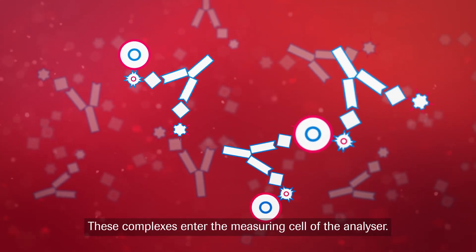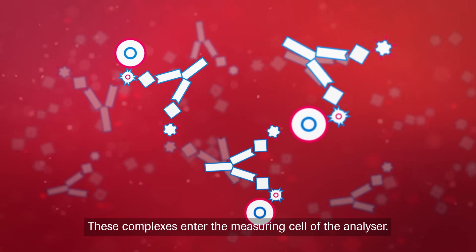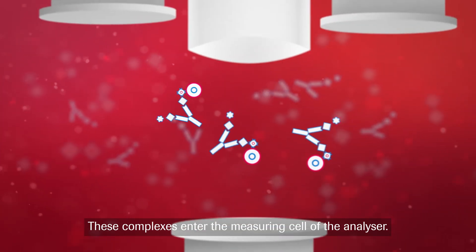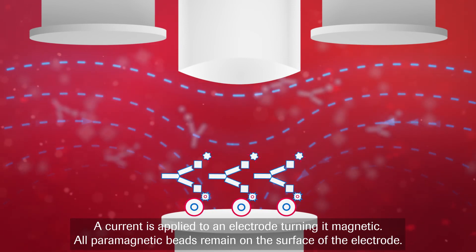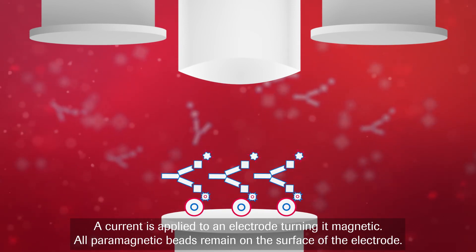These complexes enter the measuring cell of the analyzer. A current is applied to an electrode, turning it magnetic. All paramagnetic beads remain on the surface of the electrode.